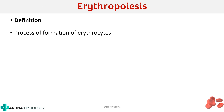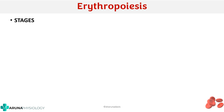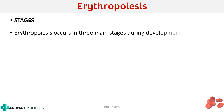We'll start with the definition of erythropoiesis. In simple terms, it is the process of formation of erythrocytes. Next we'll see the different stages of erythropoiesis. We know that erythropoiesis occurs even during the fetal time, even in the intrauterine lifetime itself.